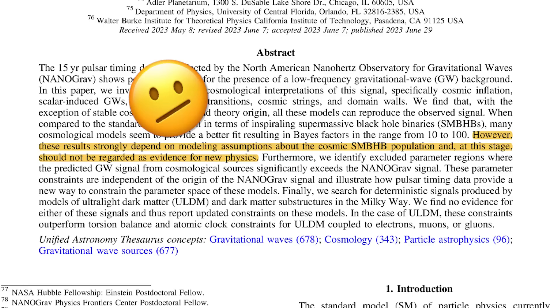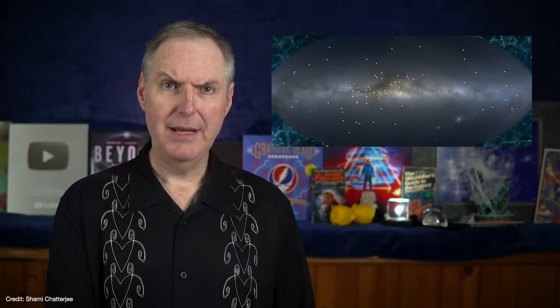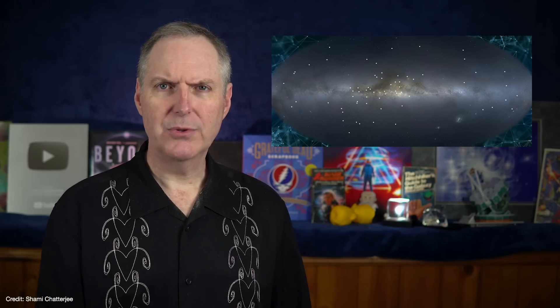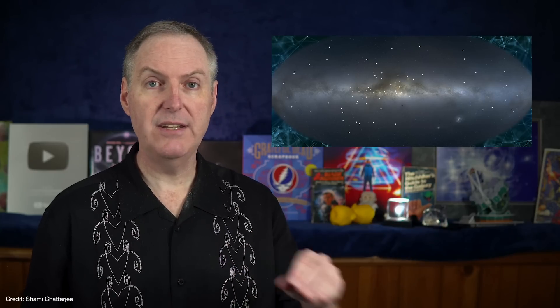To really know what the GWB is really composed of, we just need to get more data. On the one hand, that means observing more pulsars for longer periods of time. But then again, we don't have to wait another 20 years to make real progress. The current Nanograv results were based on their 15-year dataset, but they're currently compiling an 18-year dataset which will likely include stronger signals.